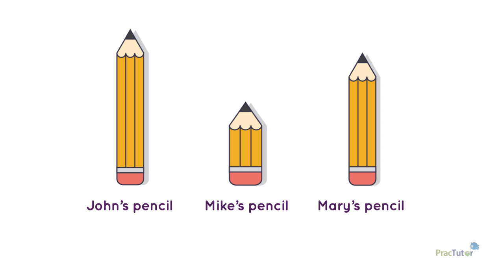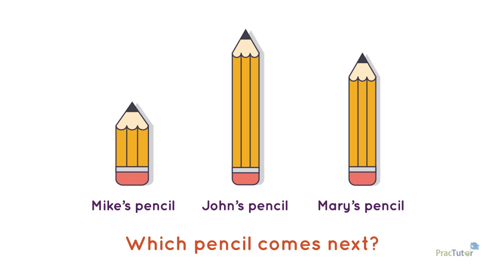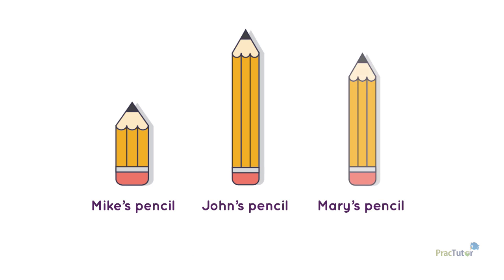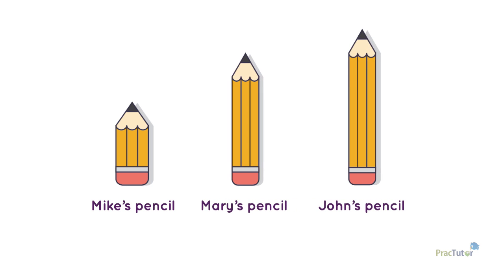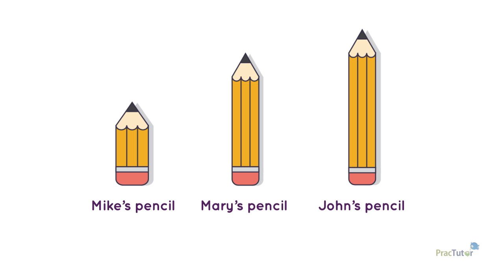Let's put these pencils in order from shortest to longest. Mike's pencil is shortest so it comes first. Which pencil comes next? Mary's pencil comes next. Its length is in the middle, so we will put it in the middle. That leaves John's pencil. It's the longest. Your pencils are now organized from shortest to longest.